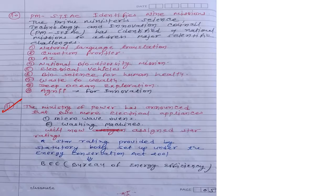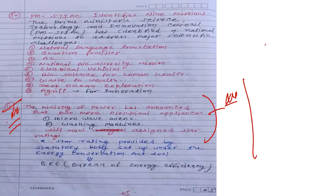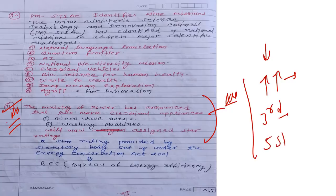Eleventh current affair: the Ministry of Power announced that two more electrical appliances — microwave ovens and washing machines — will now be assigned BEE star ratings. Star ratings indicate energy efficiency: a five-star appliance uses less electricity than a three-star one. Higher star rating means lower electricity bills but higher upfront cost.